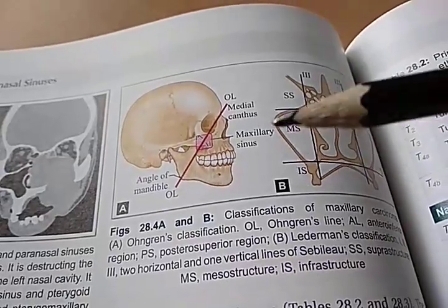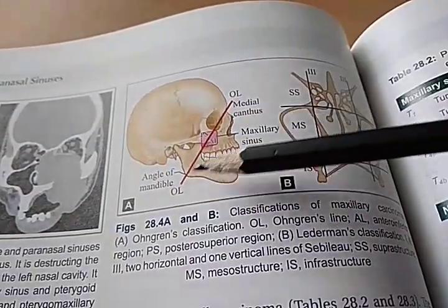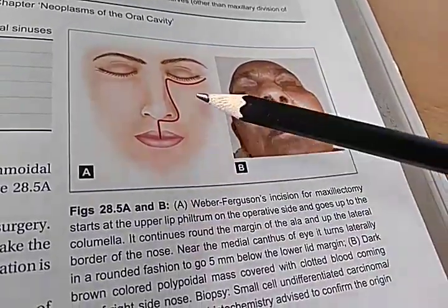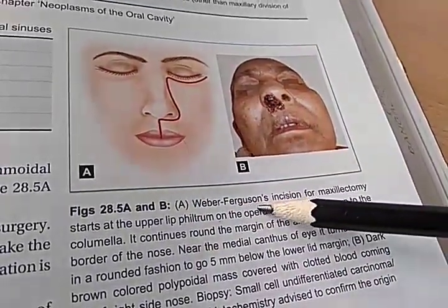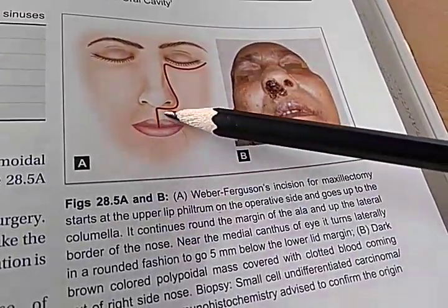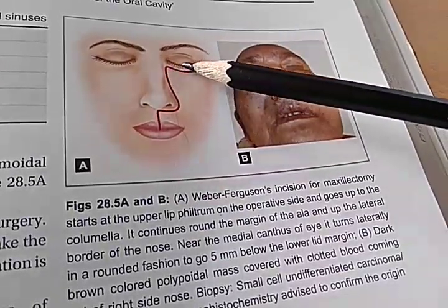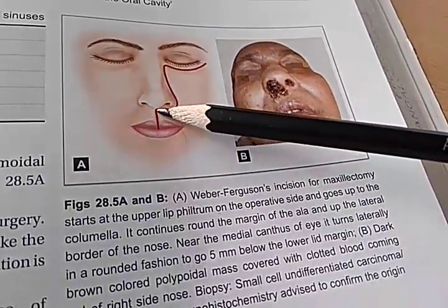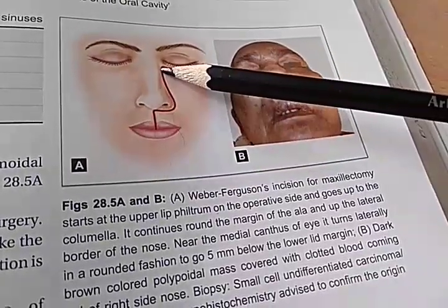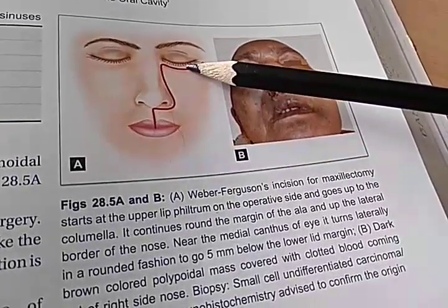What is this line? Ohngren's line — the line from the medial canthus to the angle of the mandible. What kind of incision is this? Weber-Fergusson's incision for maxillectomy. It starts at the upper lip philtrum on the operative side, goes up to the columella, continues around the margin of the ala, up the lateral border of the nose, near the medial canthus, turns naturally to go 5 mm below the lower lid margin.